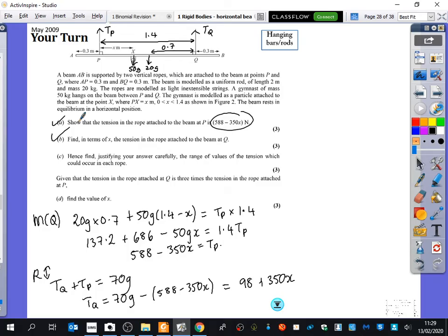It then says, hence find, justifying your answer carefully, the range of values of the tension which could occur in each rope. Did anyone know how to do this part of the question? Yeah, Hamza?